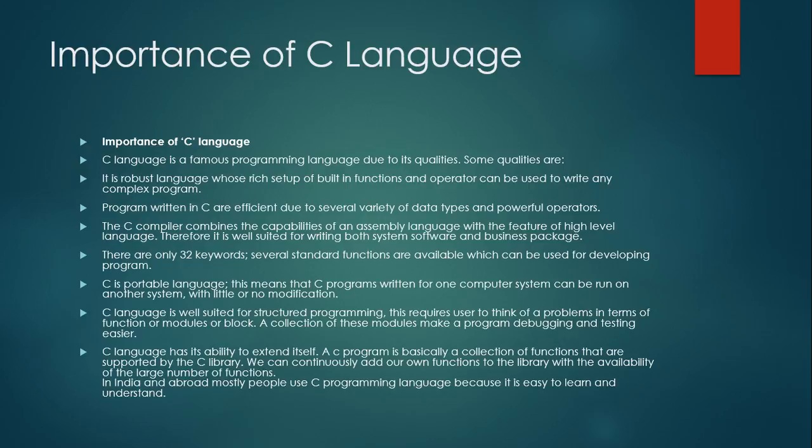There are only 32 keywords in C. Keywords are predefined or reserved words which implement a special feature in a programming language. C basically provides 32 keywords like if, while, for, and so on. Several standard functions are also available which can be used for developing programs.